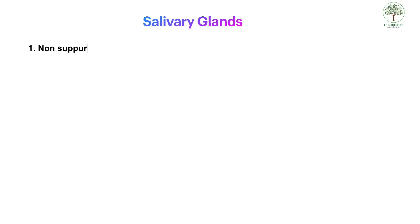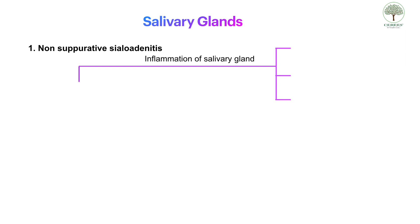In this video we will be talking about doubts related to salivary glands. The first doubt is: what is non-suppurative sialadenitis? Sialadenitis means inflammation of the salivary gland, which can be of several types. We have acute bacterial suppurative sialadenitis, where the causative organism is Staphylococcus with formation of pus.